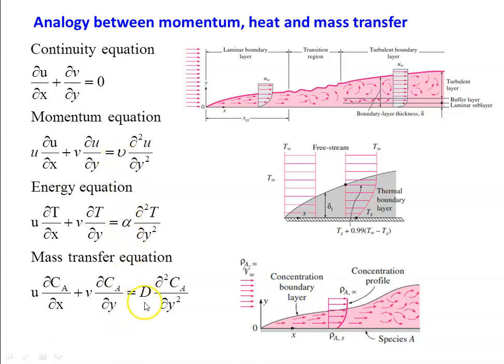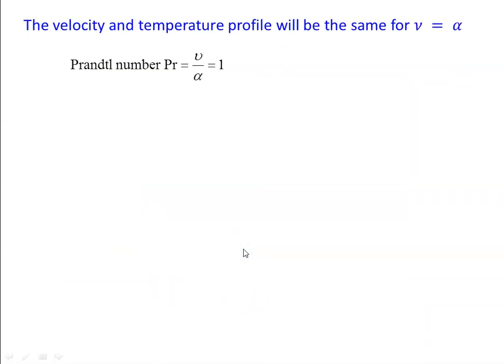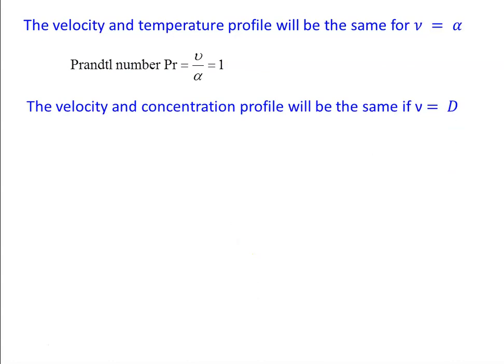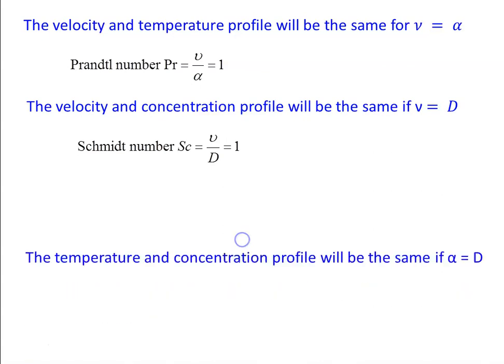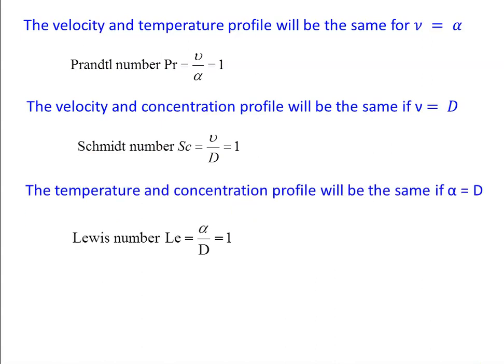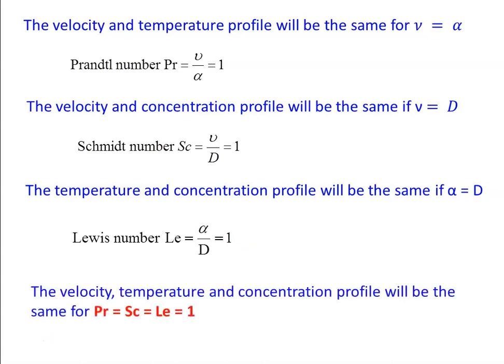Interestingly, ν, α, and D all take the same unit: m²/s. When ν = α (i.e., Prandtl number = 1), the velocity and temperature profiles are the same. When ν = D (i.e., Schmidt number = 1), the velocity and concentration profiles are the same. When α = D (i.e., Lewis number = 1), the temperature and concentration profiles are the same. When Prandtl number = Schmidt number = Lewis number = 1, all three profiles — velocity, temperature, and concentration — are identical. This is the analogy between momentum transfer, heat transfer, and mass transfer.